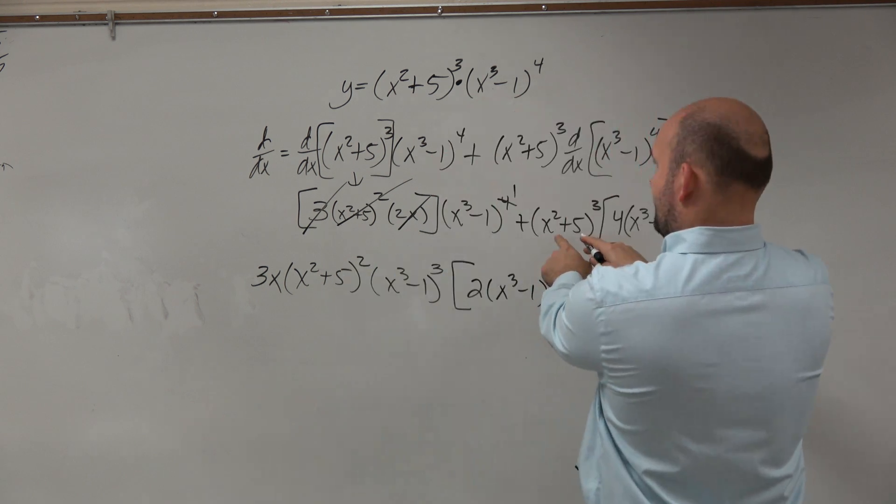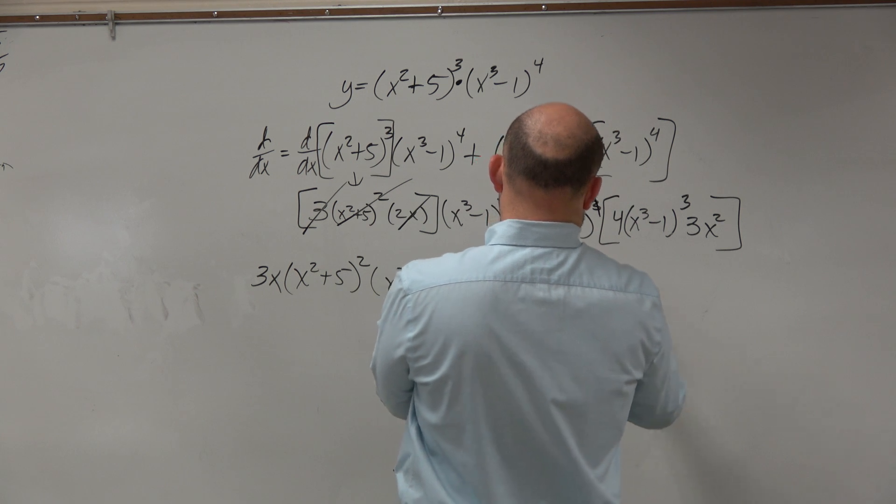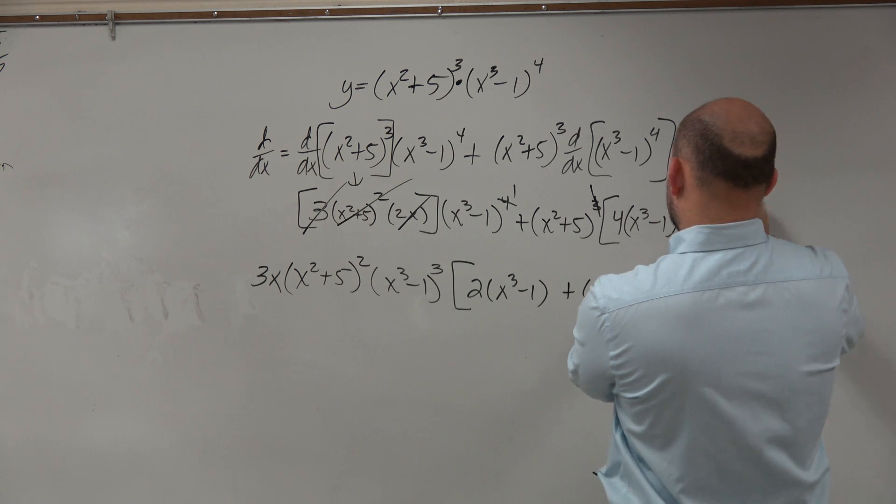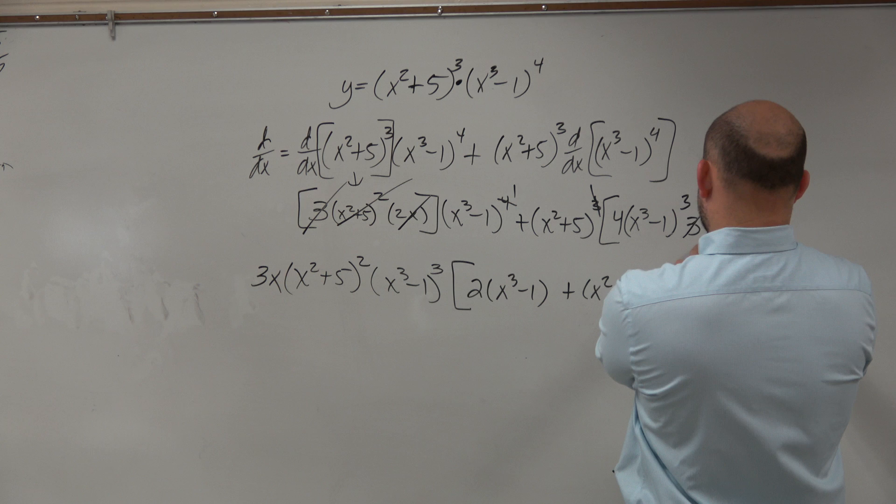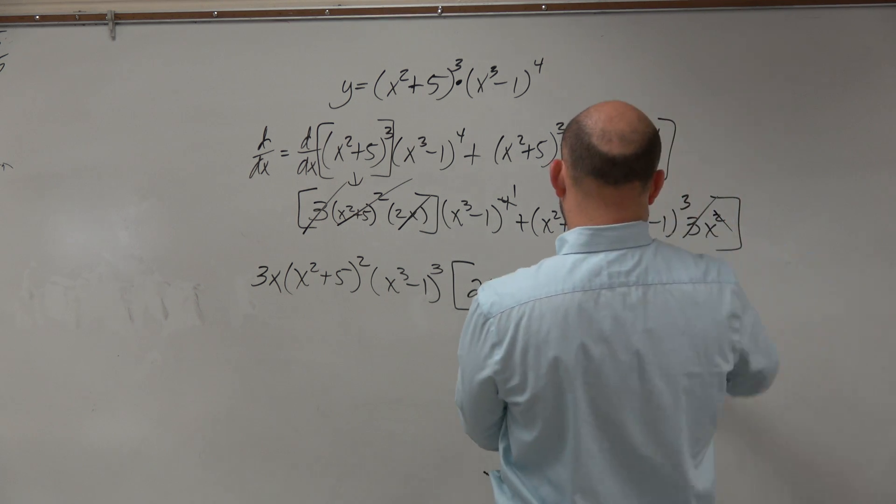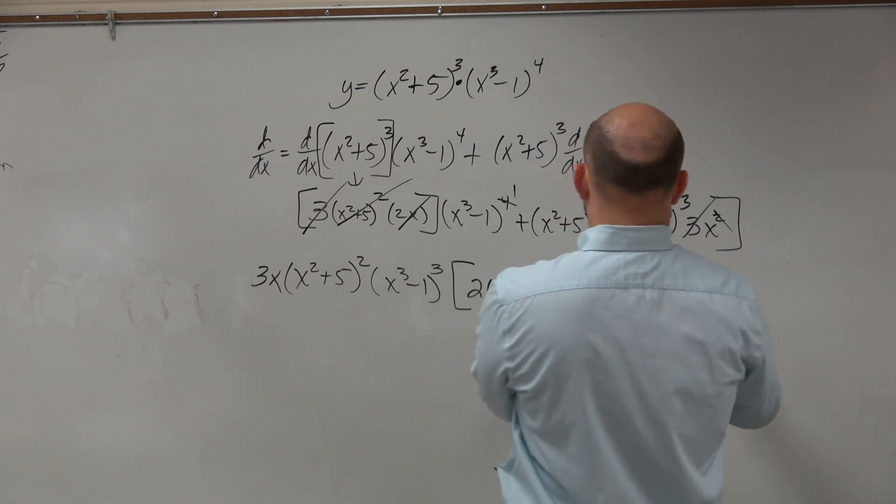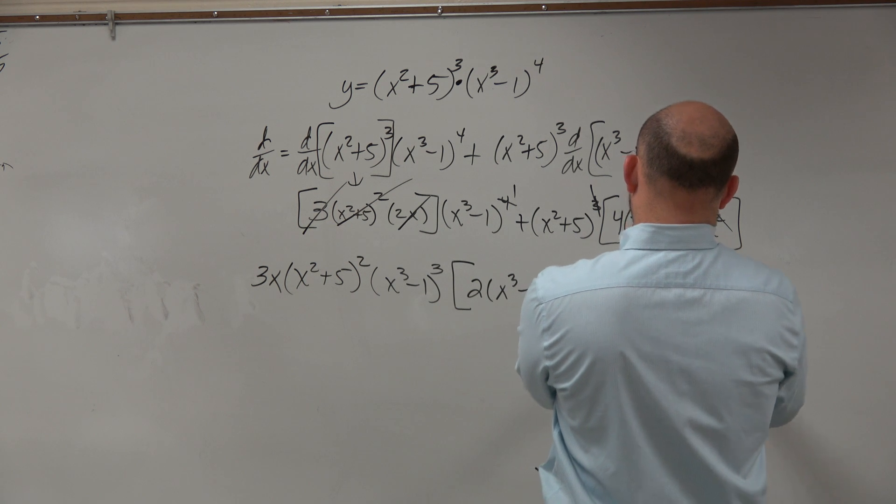Then over here, if I pulled out an x squared, that would go to 1. The 3 would divide out. The x would go to 1. So therefore, I'd be left with a 4x. Let's write that in front. 4x times x squared plus 5.